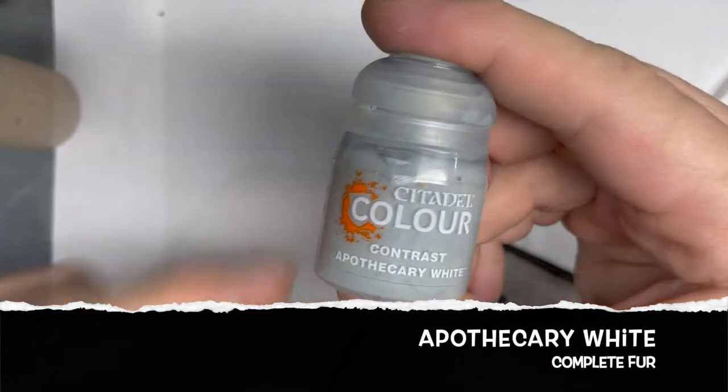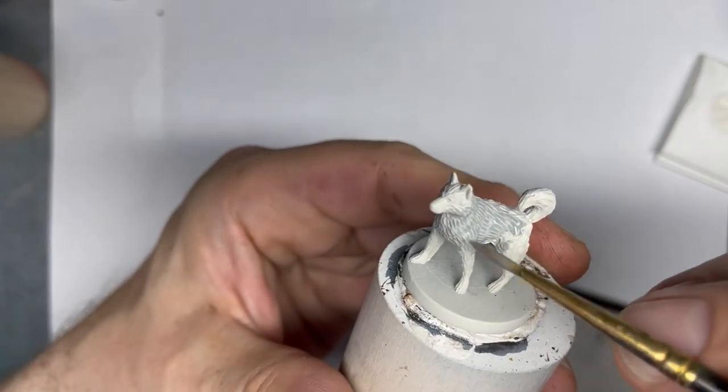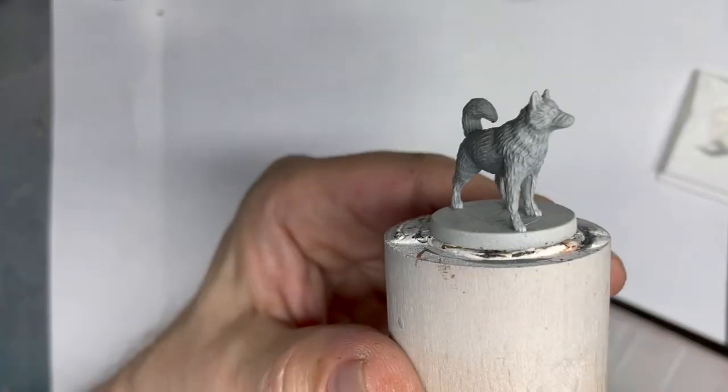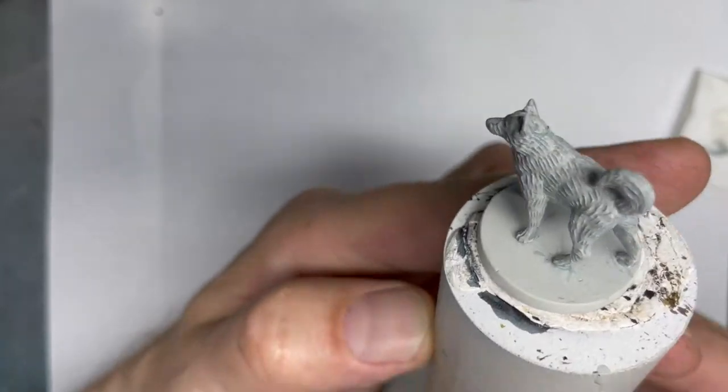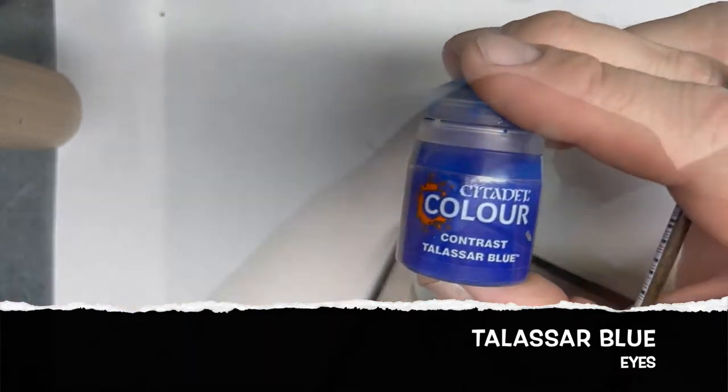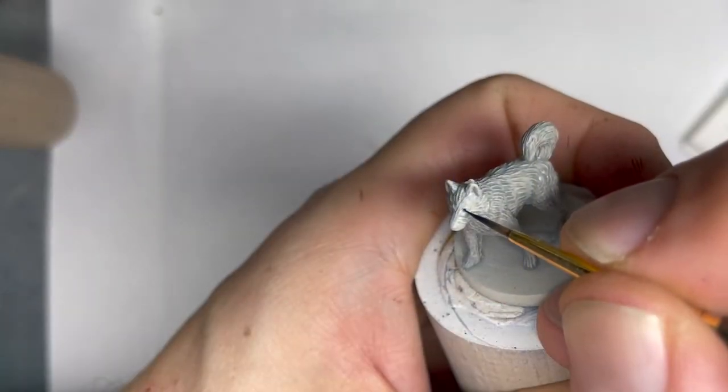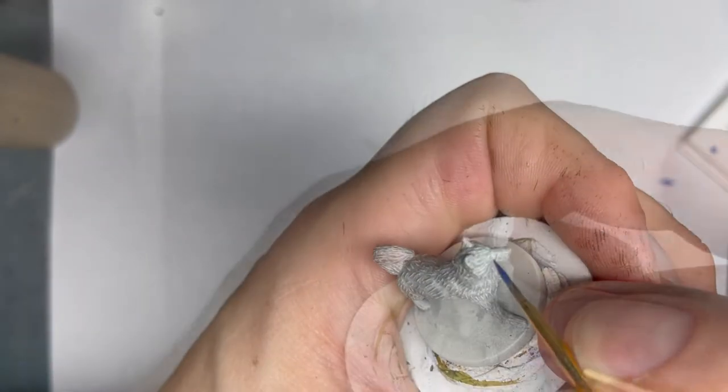First of all we take Apothecary White and give a thin even coat and let it dry properly. Next up we take Thalassa Blue for the eyes. You know, the huskies got really shiny bright eyes, so that's the right color to do this.